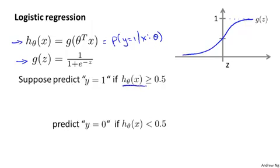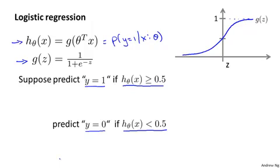Whenever the hypothesis outputs that the probability of y being 1 is greater than or equal to 0.5 — meaning it's more likely to be y equals 1 than y equals 0 — then let's predict y equals 1. And otherwise, if the estimated probability of y being 1 is less than 0.5, then let's predict y equals 0.